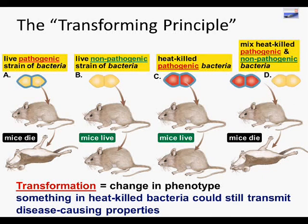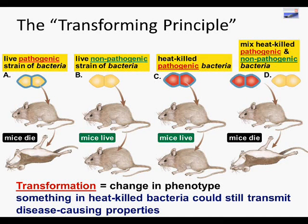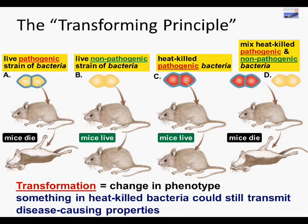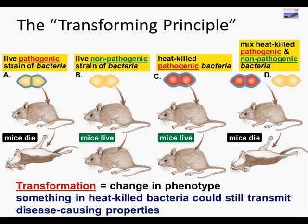Looking at the mice pictures: if you put a live pathogenic strain of bacteria in, mice died. If you put a live non-pathogenic strain in, mice lived. If you put a heat-killed strain — where you've tried to denature as much of the enzyme as possible — into live mice, they were fine. However, if you mixed a pathogenic heat-killed with a non-pathogenic, those mice died. So the transformation he referred to was this change in phenotype — killing or non-killing — meaning something in the heat-killed bacteria could still transmit disease-causing properties.